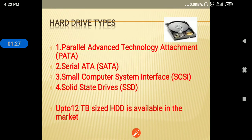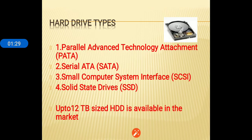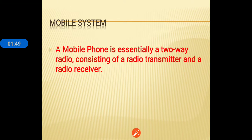Here are the types of hard drive: Parallel Advanced Technology Attachment (PATA), Serial ATA (SATA), Small Computer System Interface (SCSI), and Solid State Drives (SSD). These are the different categories of hard drive used in a computer system, and up to 12 TB size HDD is available in computer systems.